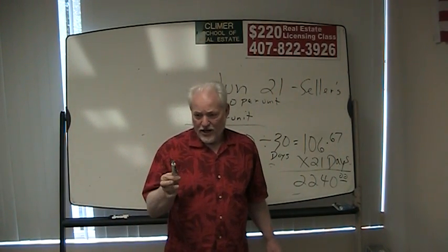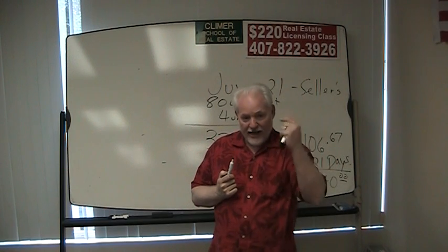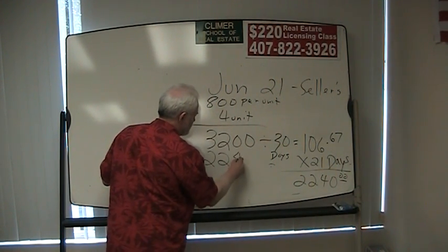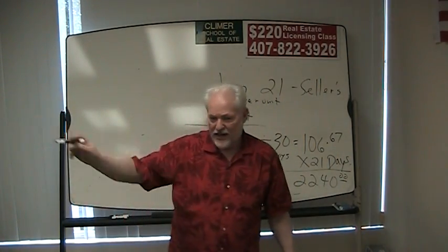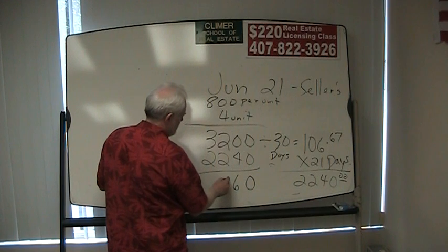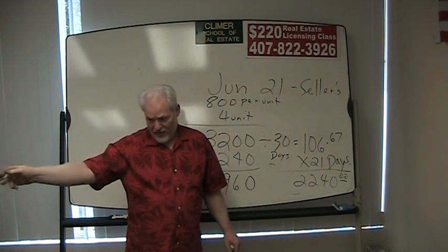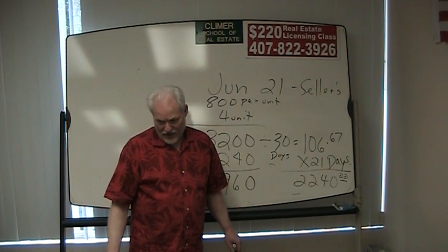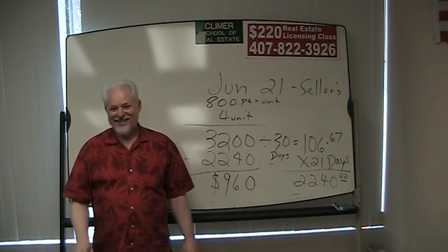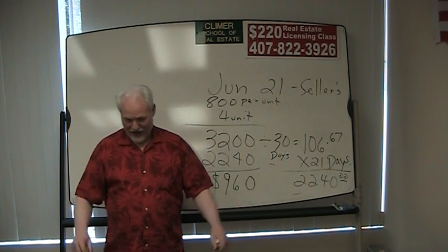The seller is entitled to $2,240. How much did he collect on the first of the month? $3,200. So he's collected $3,200, he's entitled to $2,240 of it. The rest of that money he's going to be turning over to the buyer — which is $960. That's $960 that the seller owes to the buyer. The seller is paying the buyer: frowny face, debit to the seller; smiley face, credit to the buyer. $960 — debit to the seller, credit to the buyer.